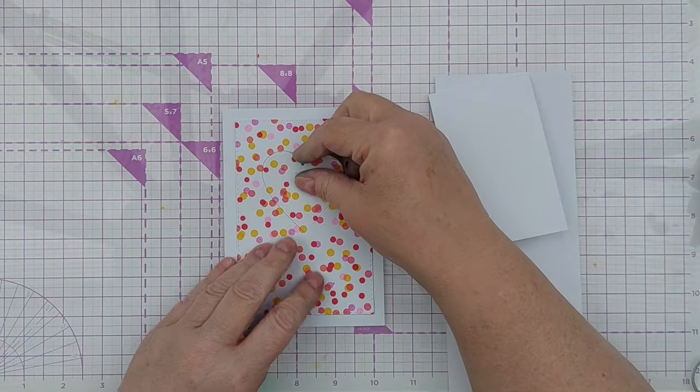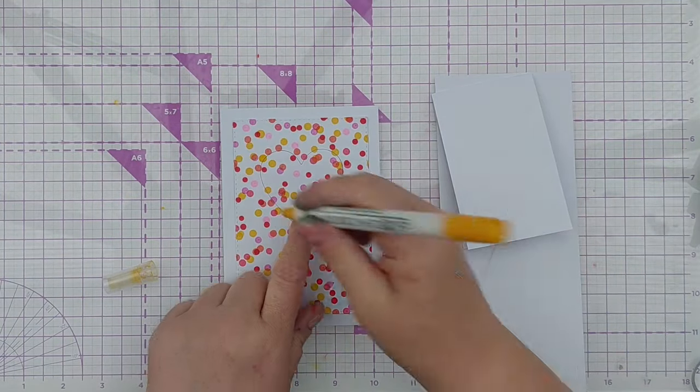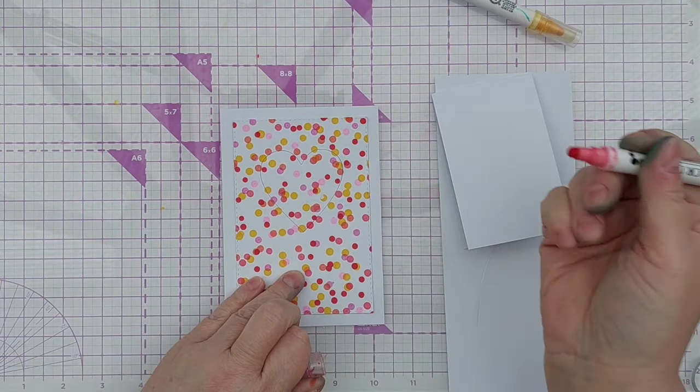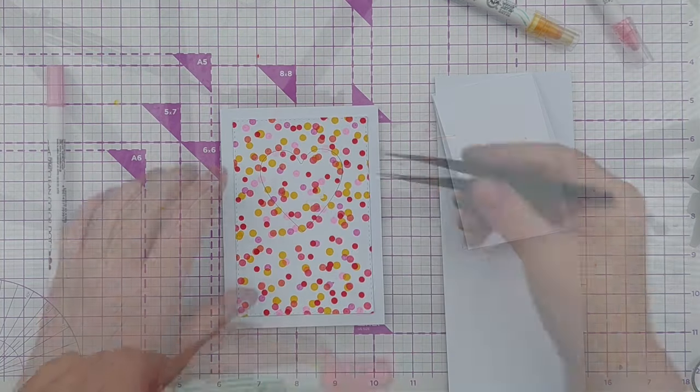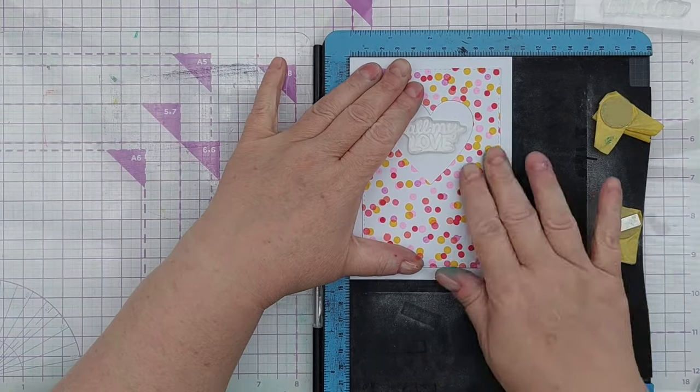When I looked at my panel sitting on my card, I thought the heart wasn't quite defined enough. So I put the dotty heart back in the hole to act as a mask and then brought in my dot markers again and added a few extra dots around the edge of the heart.